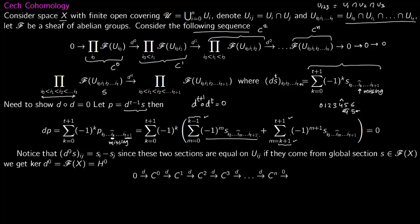The point is that this and this have opposite signs—you have m+1 here, you have m here. So these two cancel each other out. So if p is d(s), we have shown dp, which equals d composed with d of s, is zero.